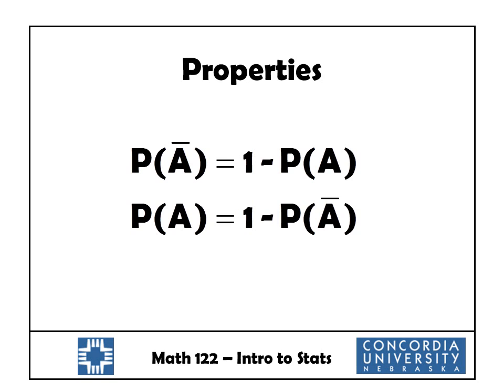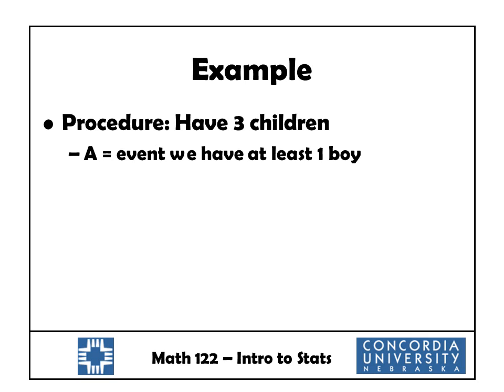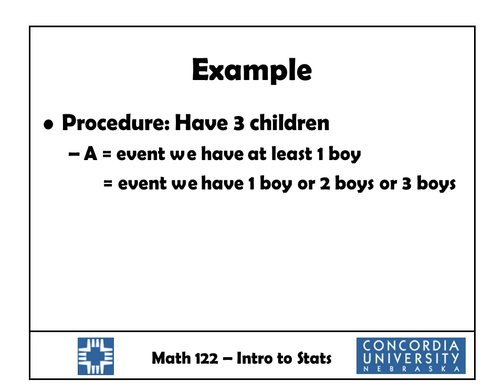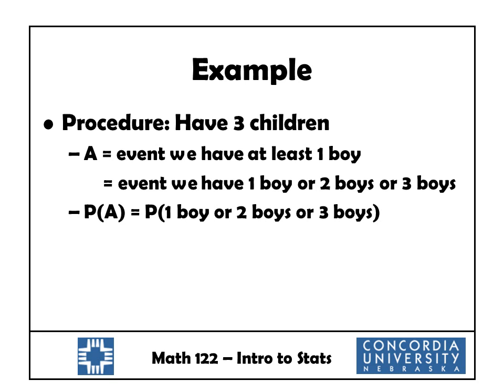To illustrate that idea, let's look at this example. A procedure: we have three children, and we're interested in their genders. Let A be the event that we have at least one boy. At least one boy means we have one boy, or two boys, or three boys. If I wanted to calculate the probability of A, that's the probability of one boy or two boys or three boys. I see the keyword OR there, which suggests addition. I note that these three events are disjoint, so I could write this as the probability of one boy plus the probability of two boys plus the probability of three boys, then calculate these three probabilities, add them up, and get my answer.